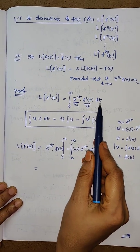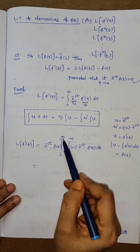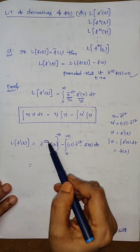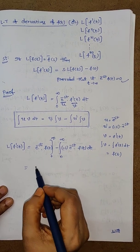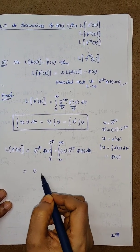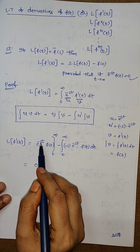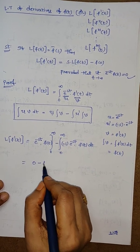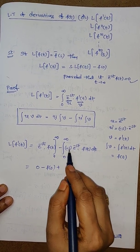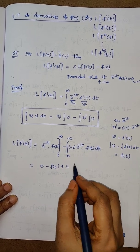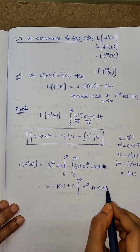Now the integration with respect to t is complete, so we substitute the upper and lower limits. Substituting the upper limit infinity, we get e power minus infinity, which equals 0, so 0 times f of t gives 0. By substituting the upper limit we get 0. Then substituting the lower limit, e power 0 equals 1, giving f of 0. The minus minus becomes plus. Since we are integrating with respect to t, we treat s as a constant and write s outside the integral from 0 to infinity of e power minus st times f of t dt.